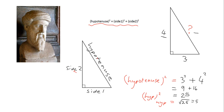And that is 5, so I can know that this length here is 5. This relationship works in every single right-angled triangle. If I want to work out what the hypotenuse is, I can just use this fact: in a right-angled triangle, hypotenuse squared is equal to side one squared plus side two squared. Here is the theorem of Pythagoras: in any right-angled triangle, the hypotenuse squared is equal to the sum of the squares on the other two sides.